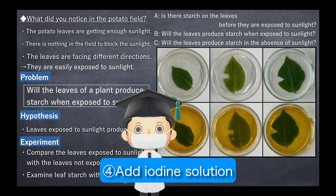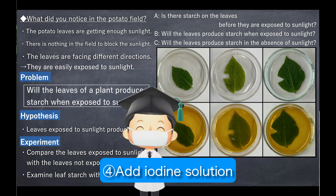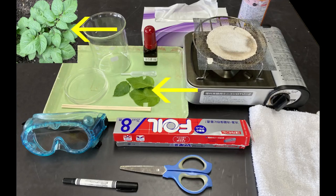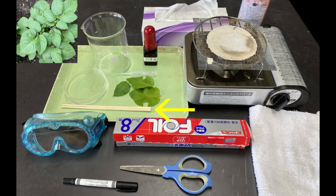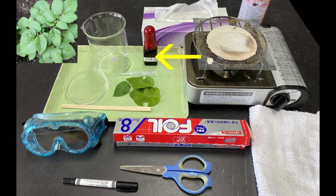Finally, add iodine solution and watch the reaction. Use iodine solution that is as strong as black tea in color. If the chemical gets on your hands, wash them well. The equipment needed includes: potato stock, aluminum foil, oil-based pen, scissors, chopsticks, beaker, stove, gas cylinder, wire mesh, wet towel, protective goggles, petri dish, iodine solution, dropper, tray, and tissue.